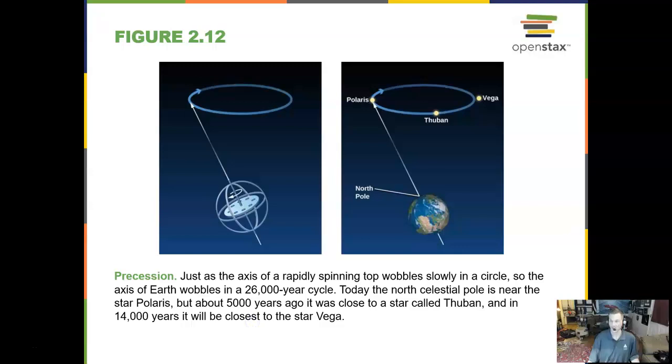Now the Earth wobbles like a spinning toy top can. And this is called precession. Precession is the wobble of Earth's north celestial pole in the sky. And it takes about 26,000 years to go all the way around once.